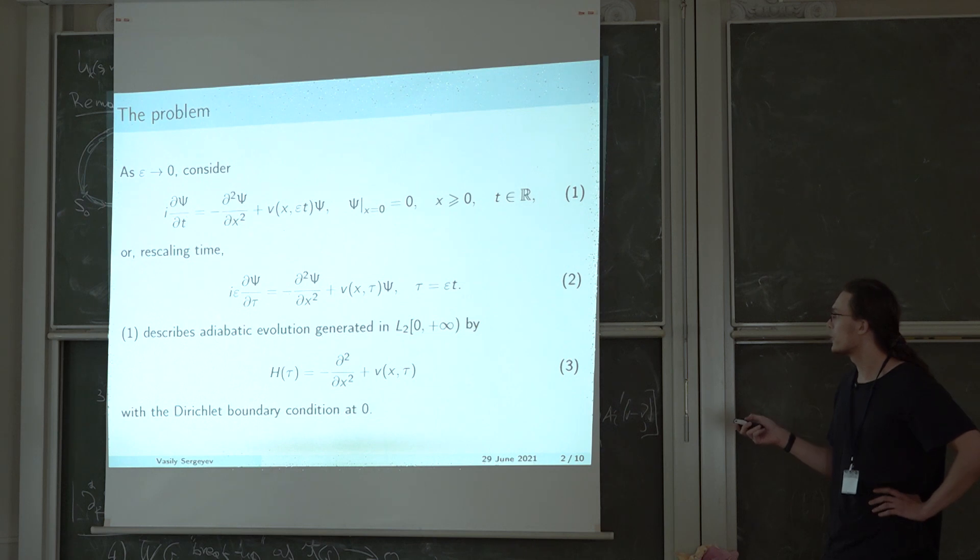The operator H of tau depends on this time tau and one says that equation 1 describes adiabatic evolution generated in L2 on the half line by this operator with the Dirichlet boundary condition at 0. I forgot to mention that we also take the solution at x equal to 0 to be 0.